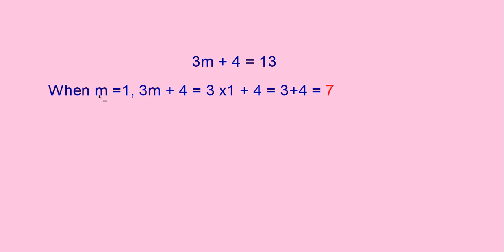Will m is equal to 1 satisfy the equation 3m plus 4 is equal to 30? When m is equal to 1, the value you are getting is 7. But here you have to get 30. So m is equal to 1 is not satisfied.